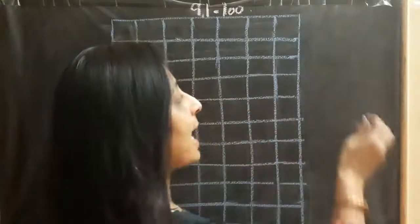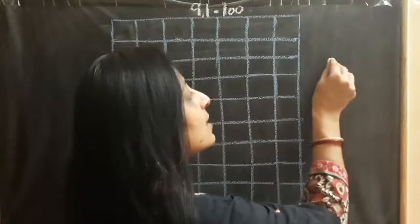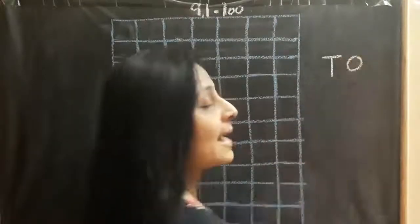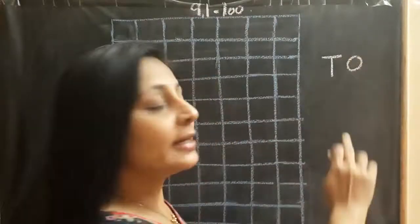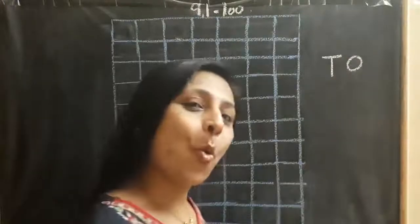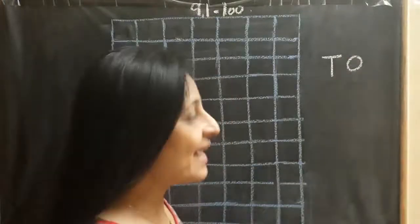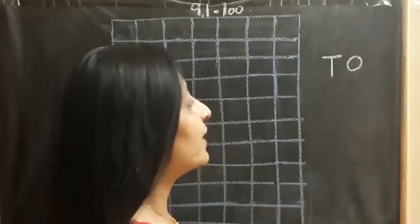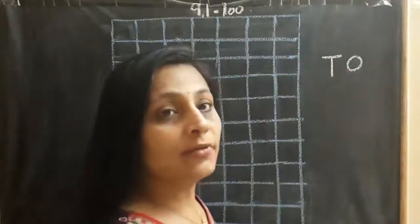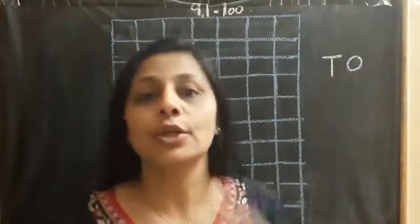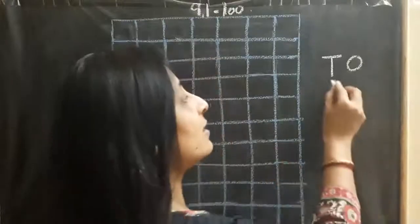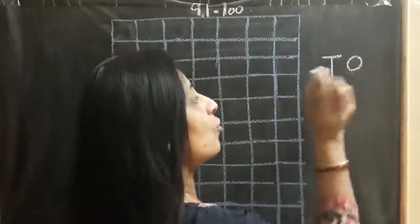Till now, we used to write numbers under T and O box. T represents tens and O represents ones. Till 91 to 99, we will be having two digits, so that is why we will write under T box and O box.